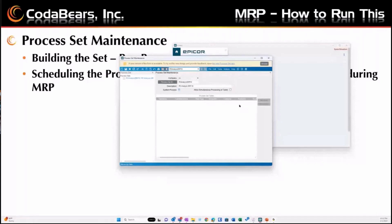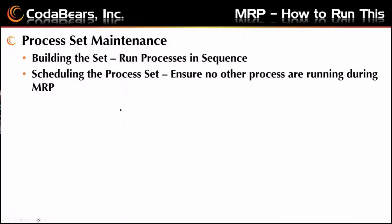One thing when building a process set: make sure with IT that you're not telling MRP to run at the same time they're doing a physical backup of the server or they have a planned outage — that will cause a problem. Double-check with IT before you put your process set out there to make sure you're not overlapping with somebody else. Once you've built that process set and kick it off, MRP is just going to run for you — though sometimes it's going to fail.